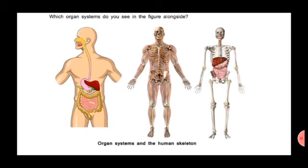Children, can you tell me which organ system do you see in the figure alongside? You can see the Digestive System, Muscular System and Skeletal System. These are the organ systems and the human skeleton.